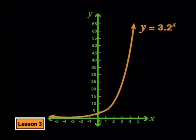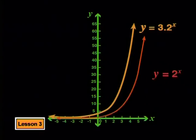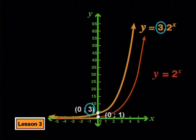Now let's compare this graph with the parent graph. Our conjecture was right — the graph has stretched vertically away from the x-axis by a factor of 3. Look at the y-intercepts: 0,1 on the parent graph has become 0,3 on the new graph, so the y-intercept of 3 is the same as the value of a. This is an interesting change from other families of graphs we have studied, where changes to the a value did not affect the y-intercept.